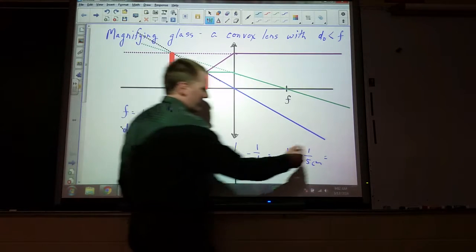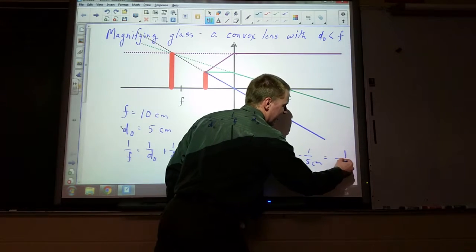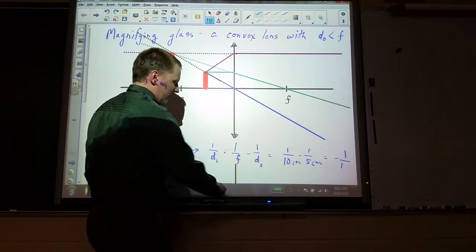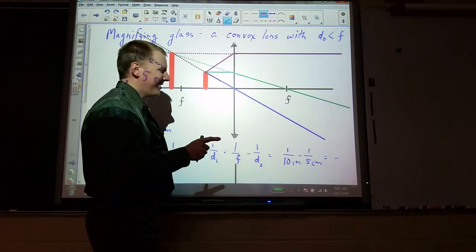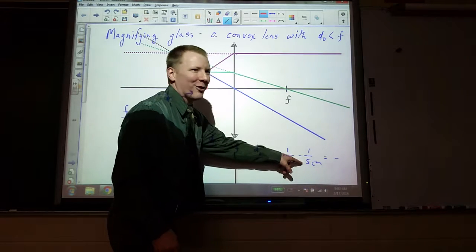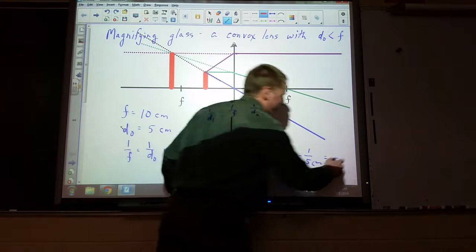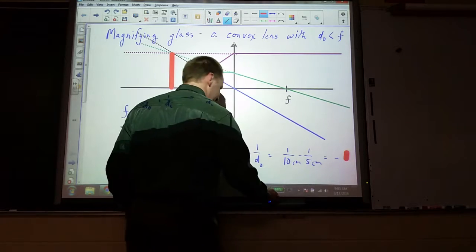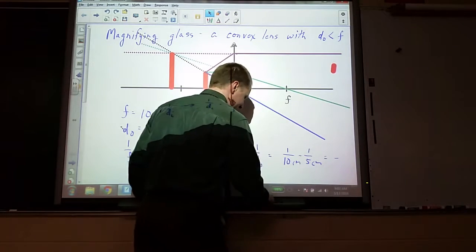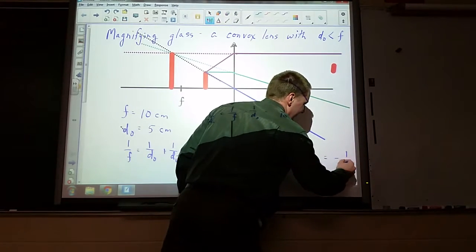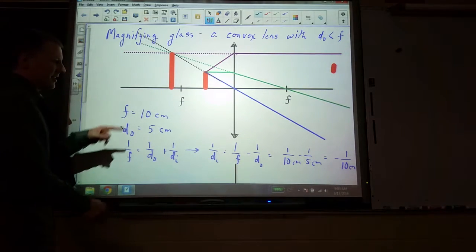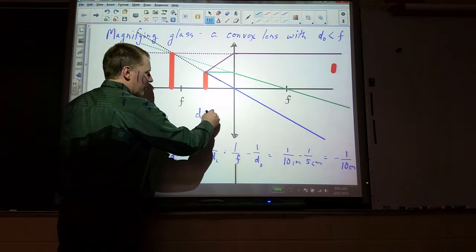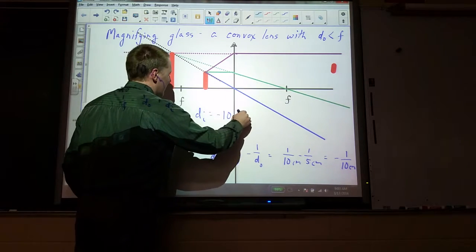We want to find the DI, so I'll subtract this term from both sides, minus 1 over DO, and then put in the values, 1 over 10 minus 1 over 5 centimeters. Doing the math quick, that ends up being negative 1 over 10. So our image distance then ends up being negative 10 centimeters.